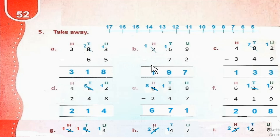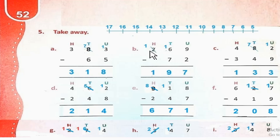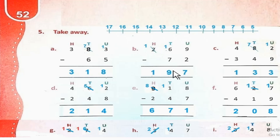Part B: 269 minus 72. 9 minus 2 = 7. 6 minus 7 — borrow करेंगे, तो यह 16 minus 7 = 9. Hundreds: 1 minus 0 = 1. So the answer is 197.